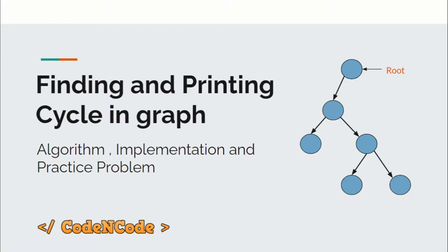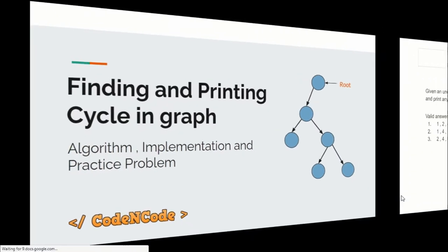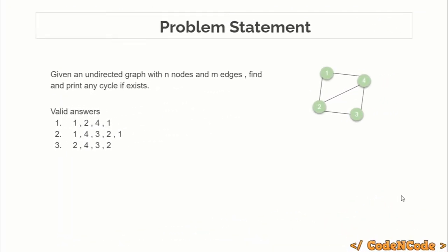So let's get started. The problem statement says you are given an undirected graph with n nodes and m edges. You have to find and print a cycle if there exists one.